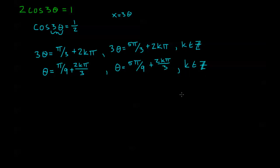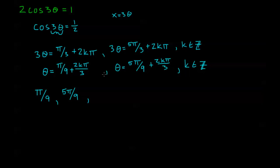Now let's say the problem asks you to find all values of theta between 0 and 2 pi. If we plug in k equals 0 to both general solutions, we get pi over 9 and 5 pi over 9. Just to make sure we don't have anything closer to 0: plugging in k equals negative 1 in the first solution gives pi over 9 minus 2 pi over 3, which is negative 5 pi over 9. And for the second solution, 5 pi over 9 minus 6 pi over 9 is negative pi over 9. So those are less than 0, meaning pi over 9 and 5 pi over 9 are our smallest positive solutions.